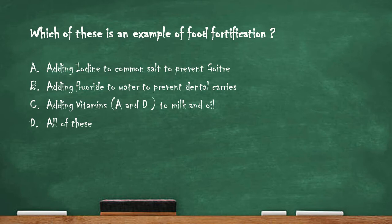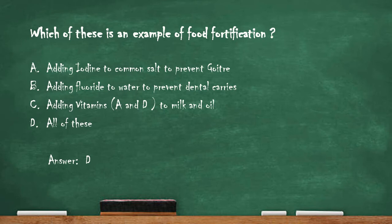Next question: which of these is an example of food fortification? Option A: adding iodine to common salt to prevent goiter. Option B: adding fluoride to water to prevent dental caries. Option C: adding vitamin A and vitamin D to milk and oil. Option D: all of these. The right answer is option D — all of these. Addition of iodine to common salt and addition of vitamins and other nutrients to food all come under fortification.